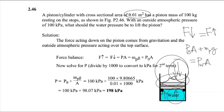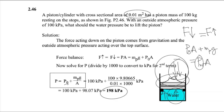This gives a simple equation. To find the water pressure, the equation is: water pressure equals atmospheric pressure plus (piston mass times g) divided by area. Solving this gives a pressure of 198 kPa, which is the pressure needed to lift the piston from the bottom.